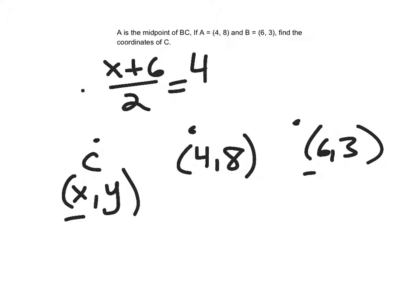So you could multiply both sides by 2. So I have x plus 6 equals 8, subtract. So I end up with x would equal 2.